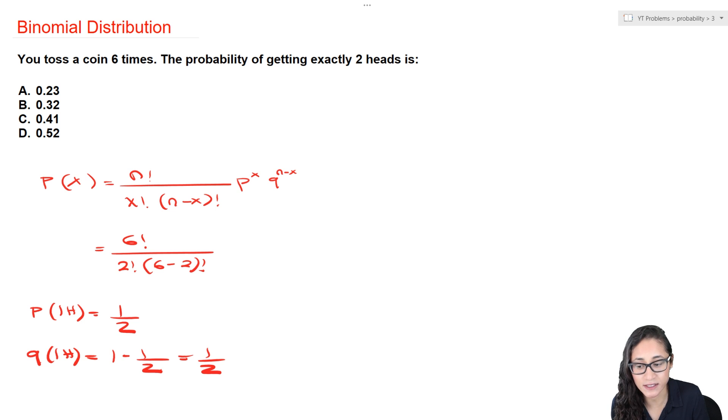Now when we're going to plug in these numbers, the exponent will take care of how many times we want to get heads. So for this problem, we're going to get heads twice, so that's why X here is going to be two.